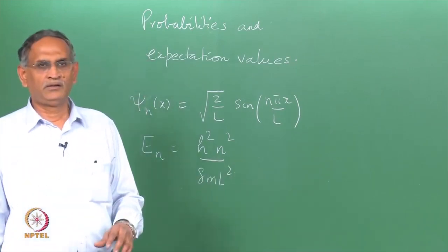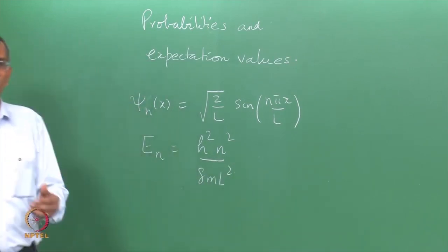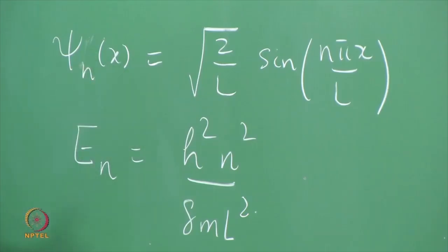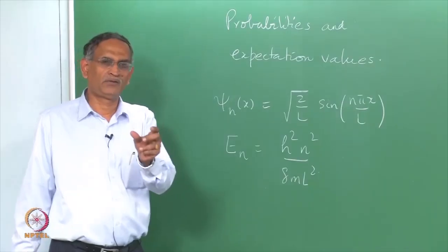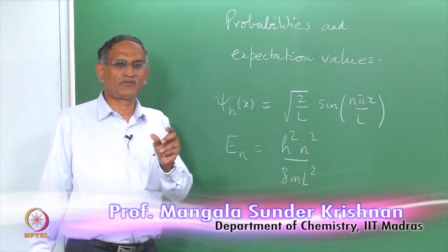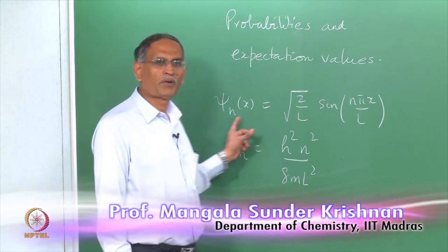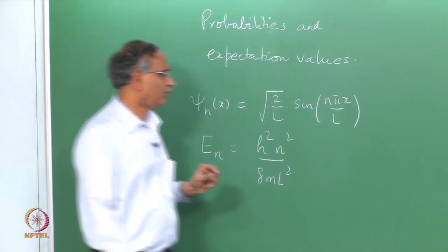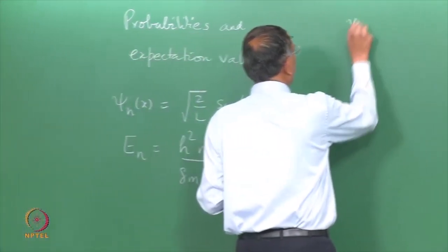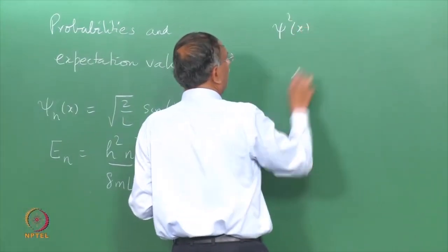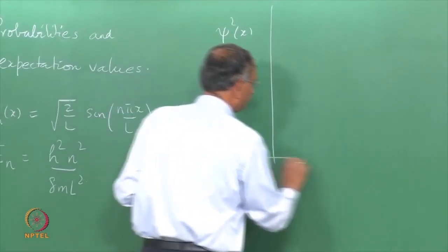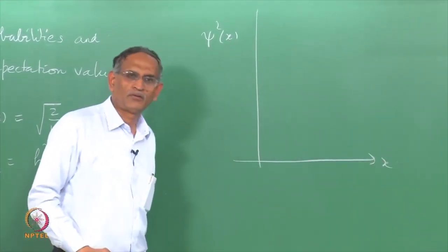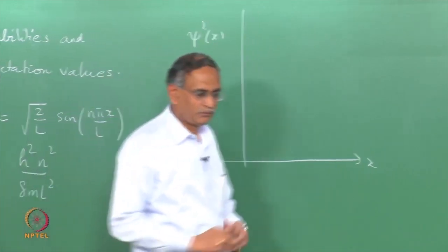Since psi star psi is the probability density at any point x and psi star psi at the small interval d x around x gives you the probability that the particle is in that small region. If you plot psi squared of x as a function of x, you get some ideas about what these probabilities mean.